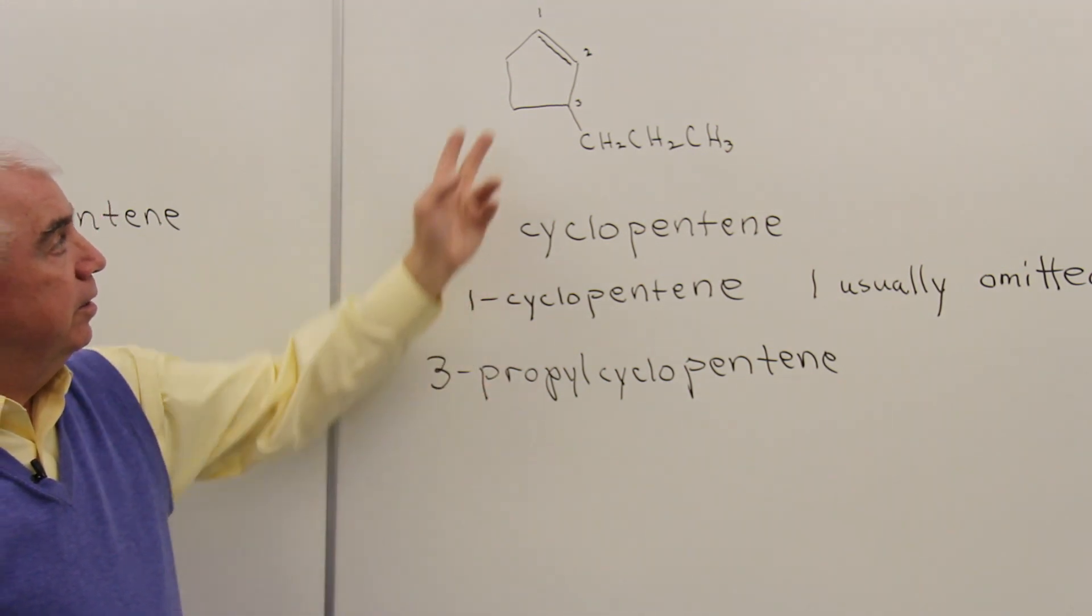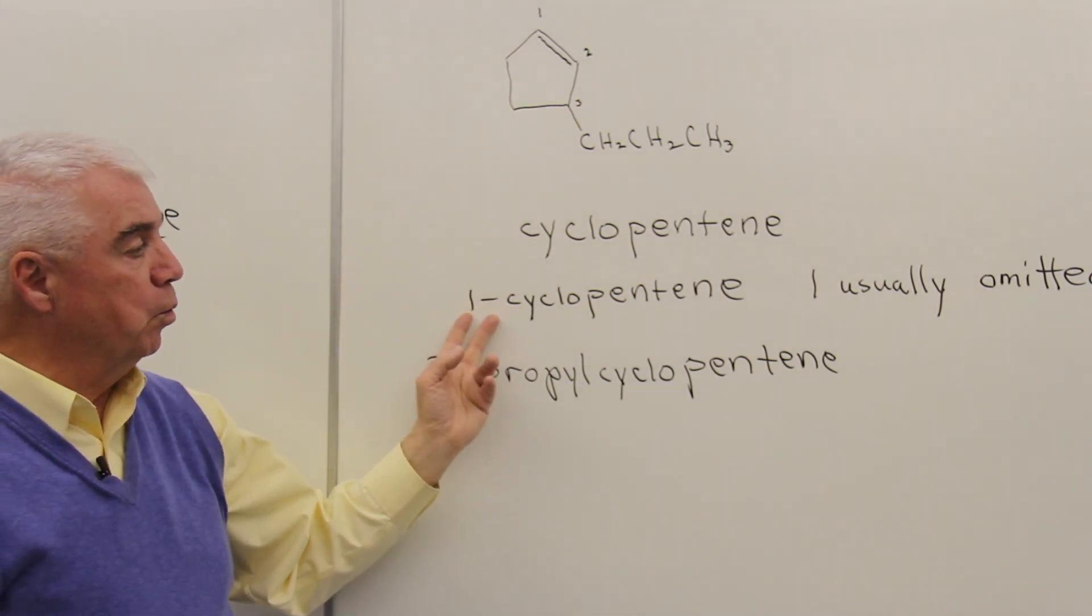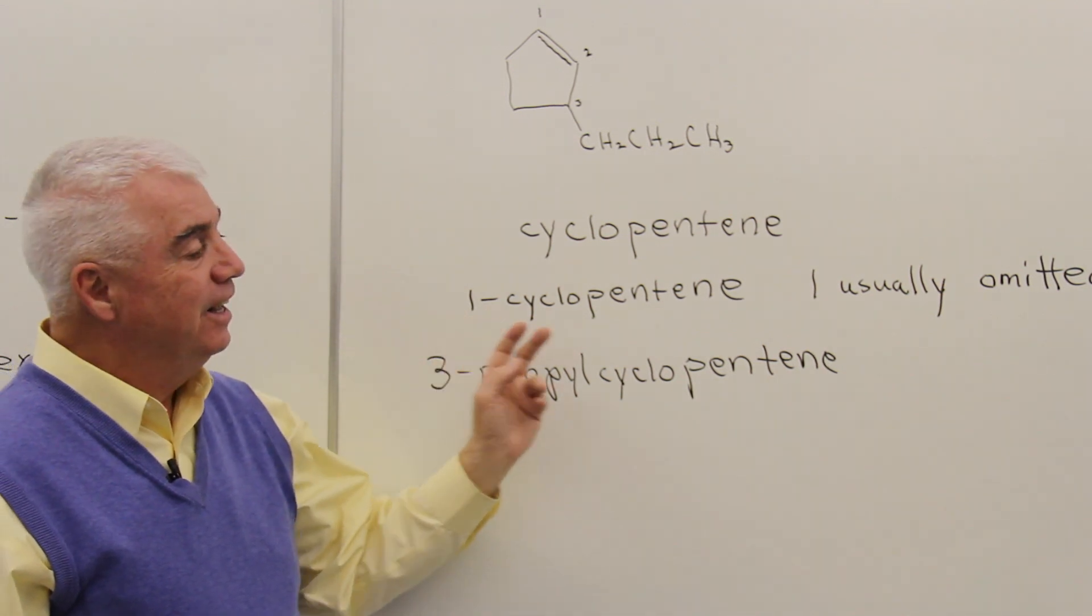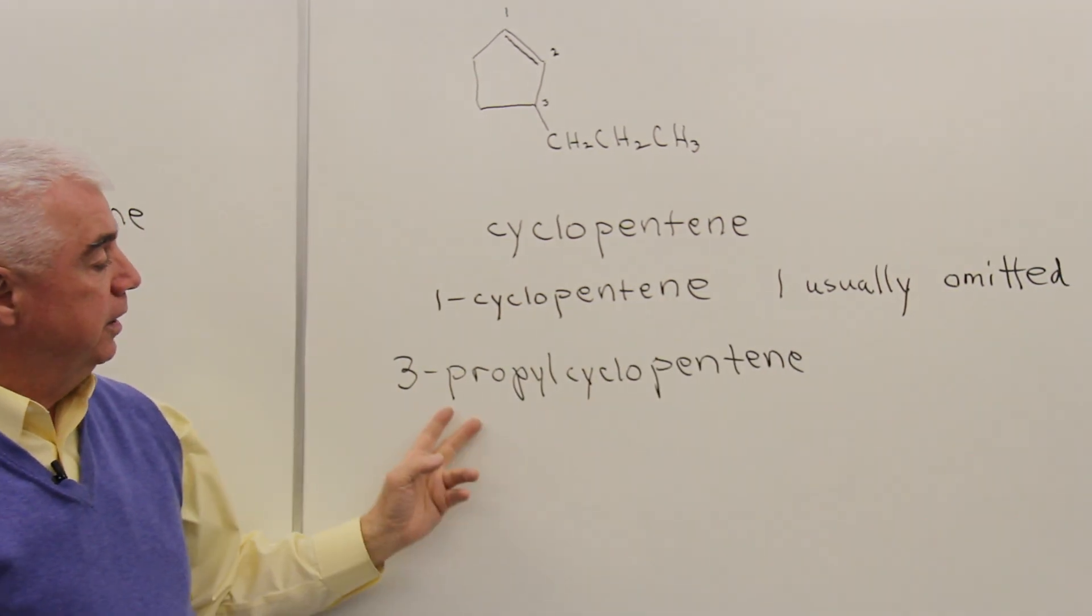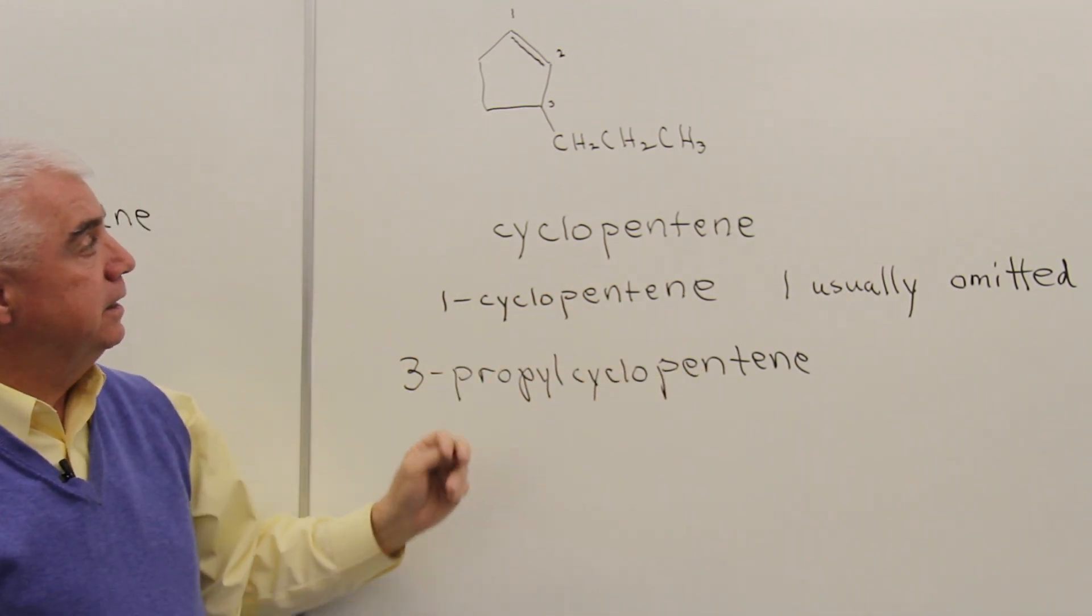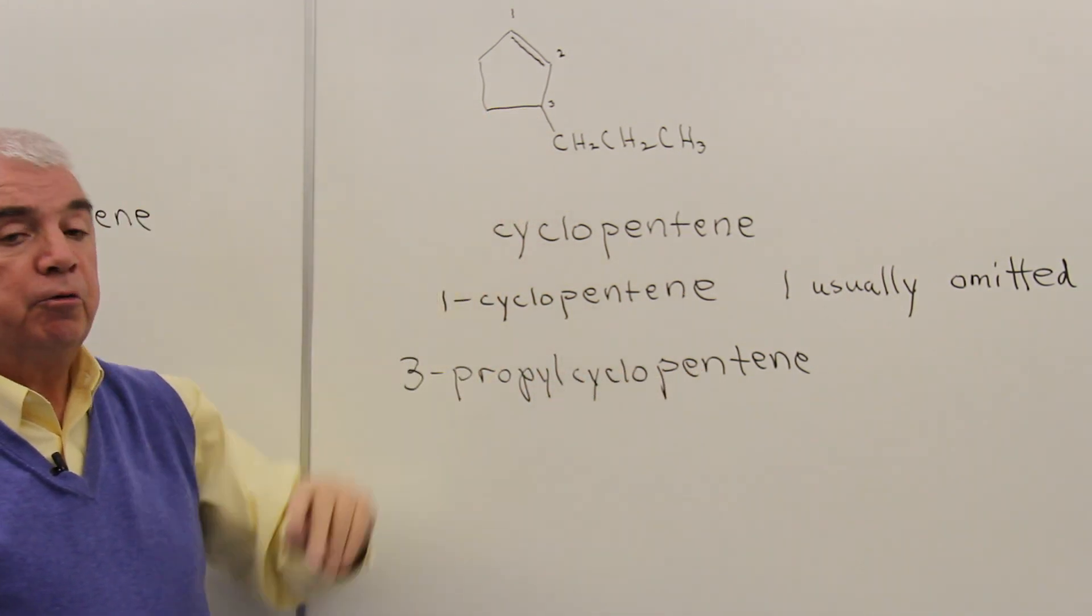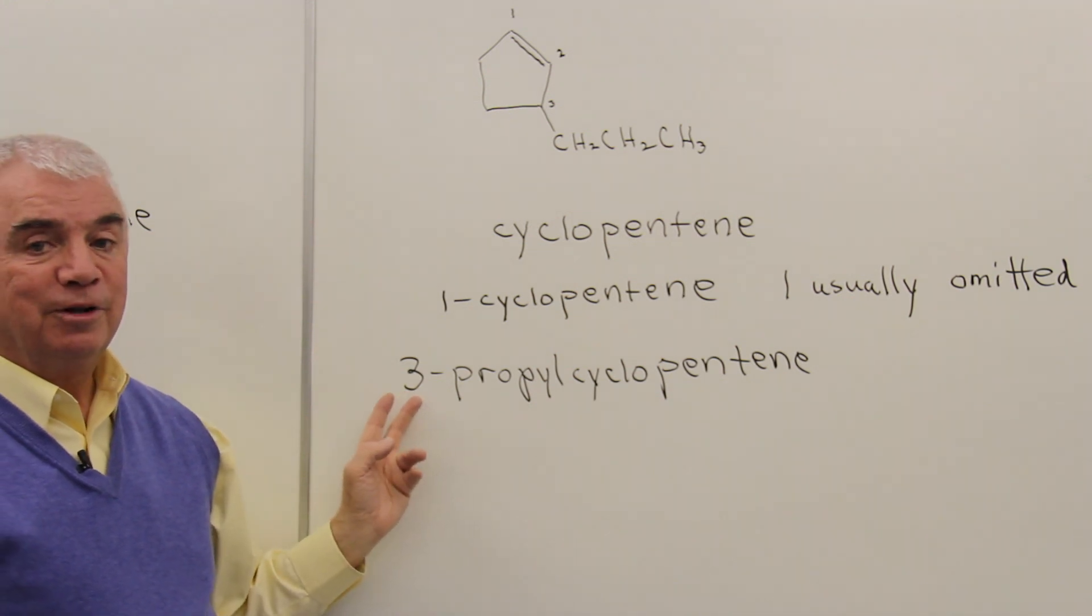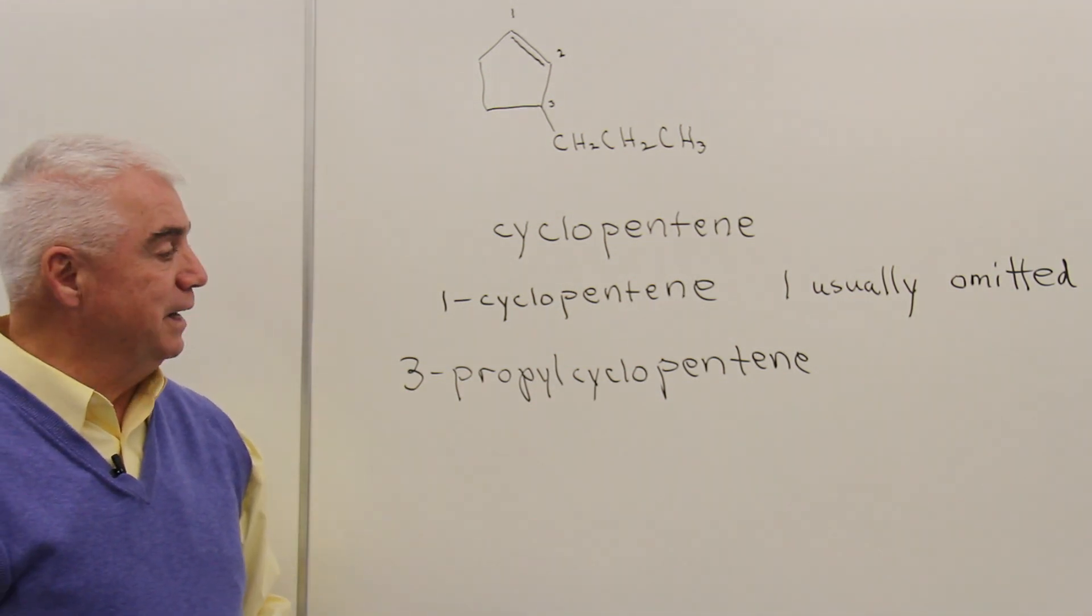And then the position of the double bond is at one, and because within a ring it has to be at one, a lot of times we just omit that number one, and we'd call it cyclopentene. And at three, at position three, we have a three carbon group. It's a propyl, 3-propyl cyclopentene.